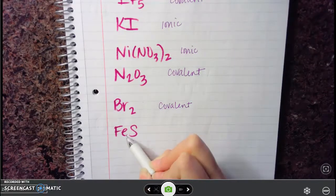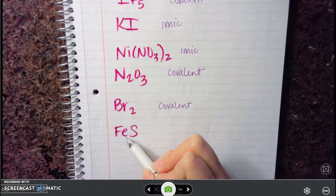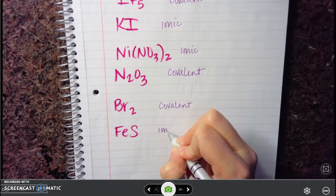And the last one, FeS. Fe is iron, that is a metal. Sulfur is a non-metal. So cation and anion, this one is ionic.